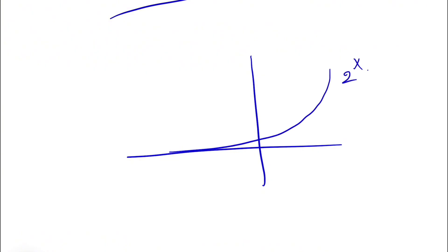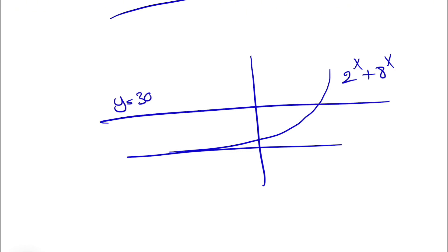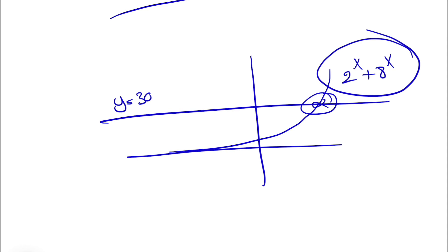The graph of 2 to the x plus 8 to the x and y equals 30 will show the intersection, confirming our answer. Plotting the graph is another way to find the answer and gives a good idea of the number of solutions. That's all — see you guys in the next video, have a good one.